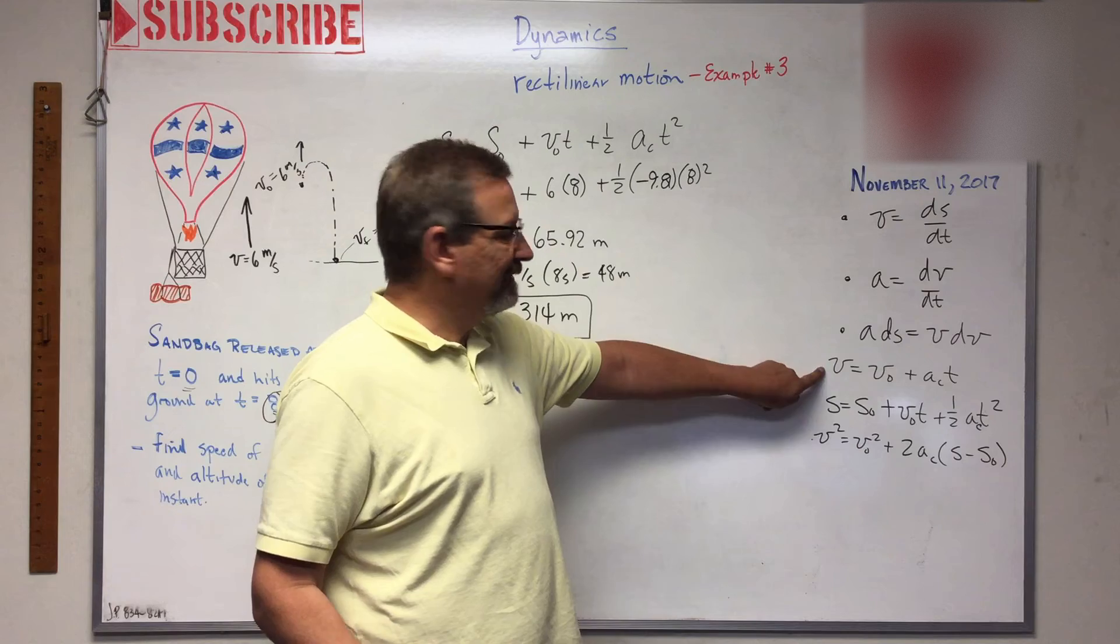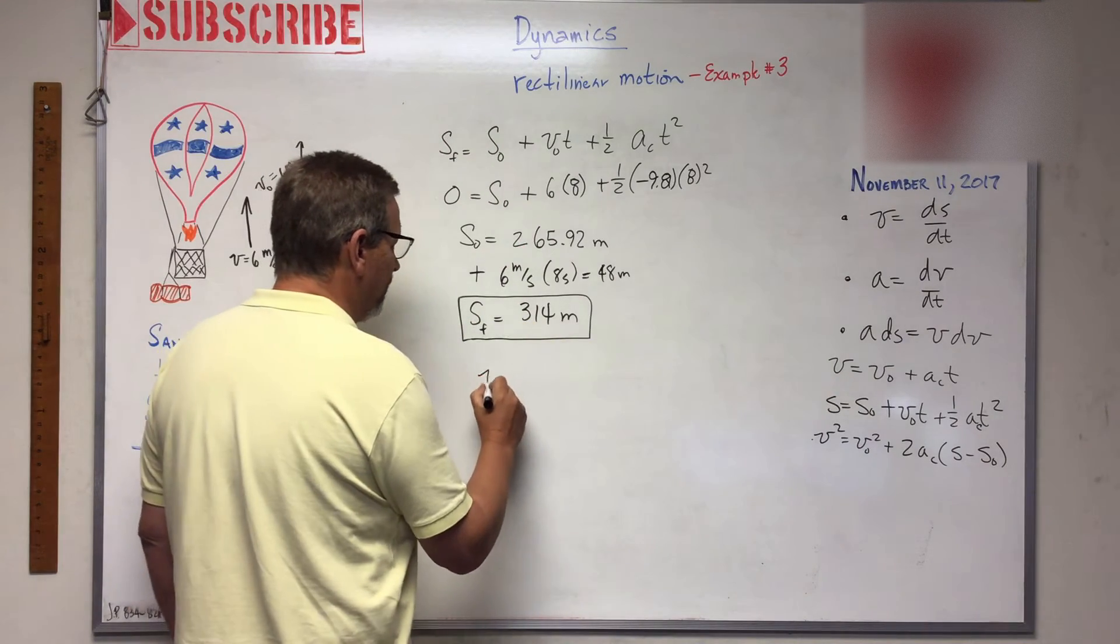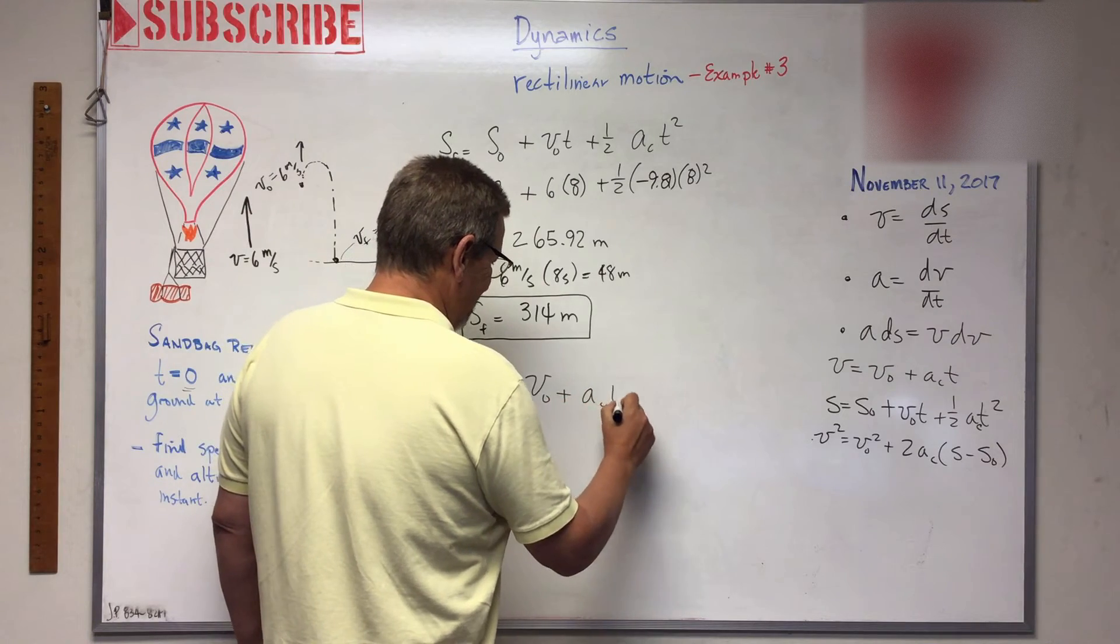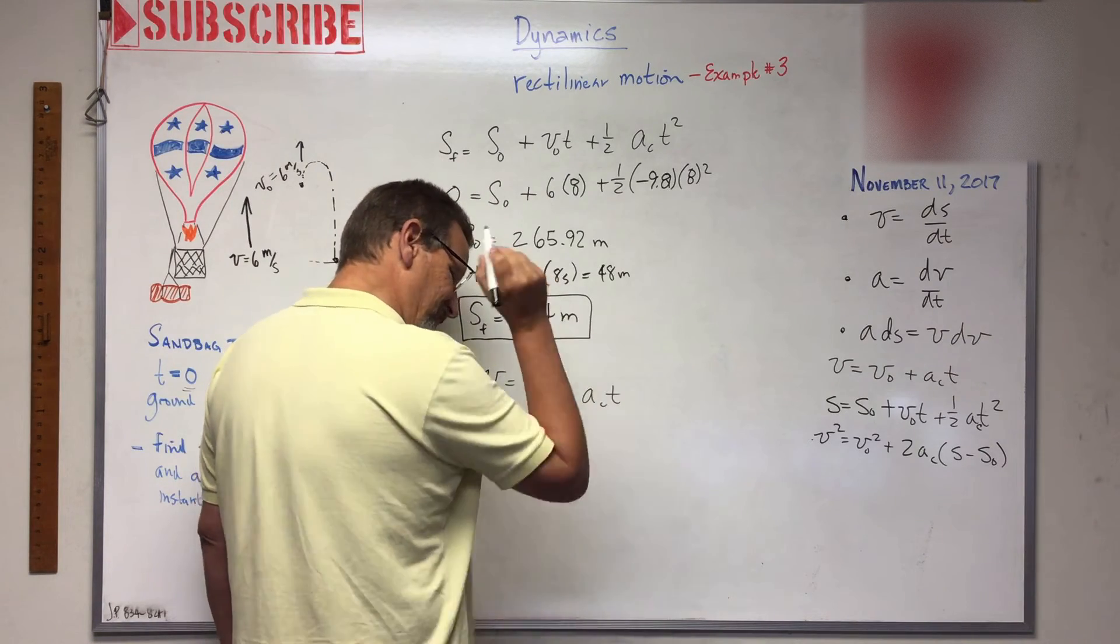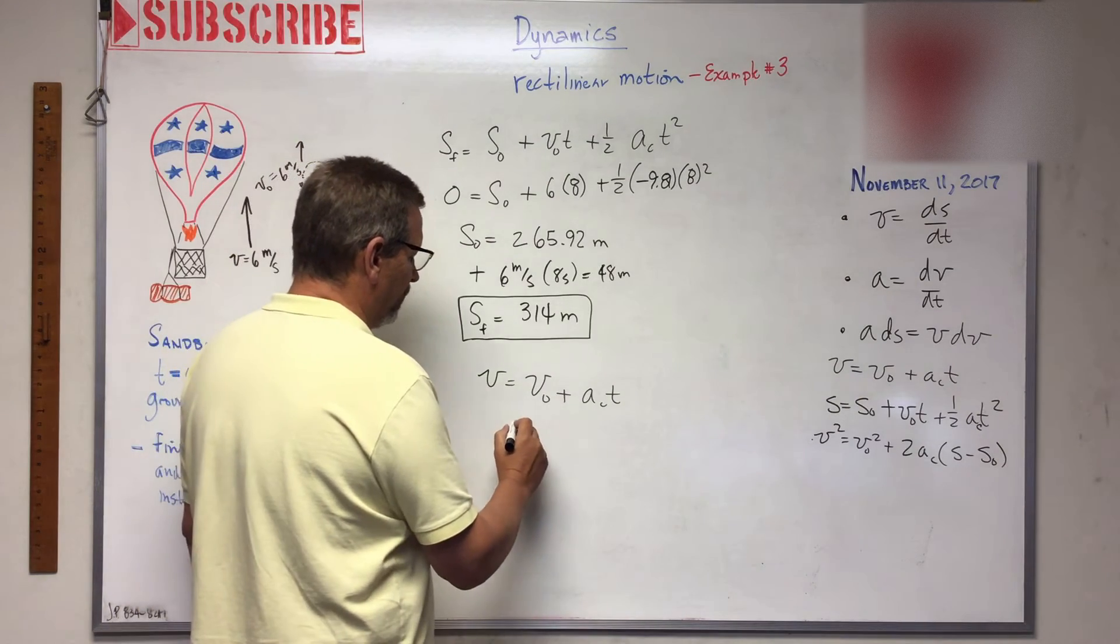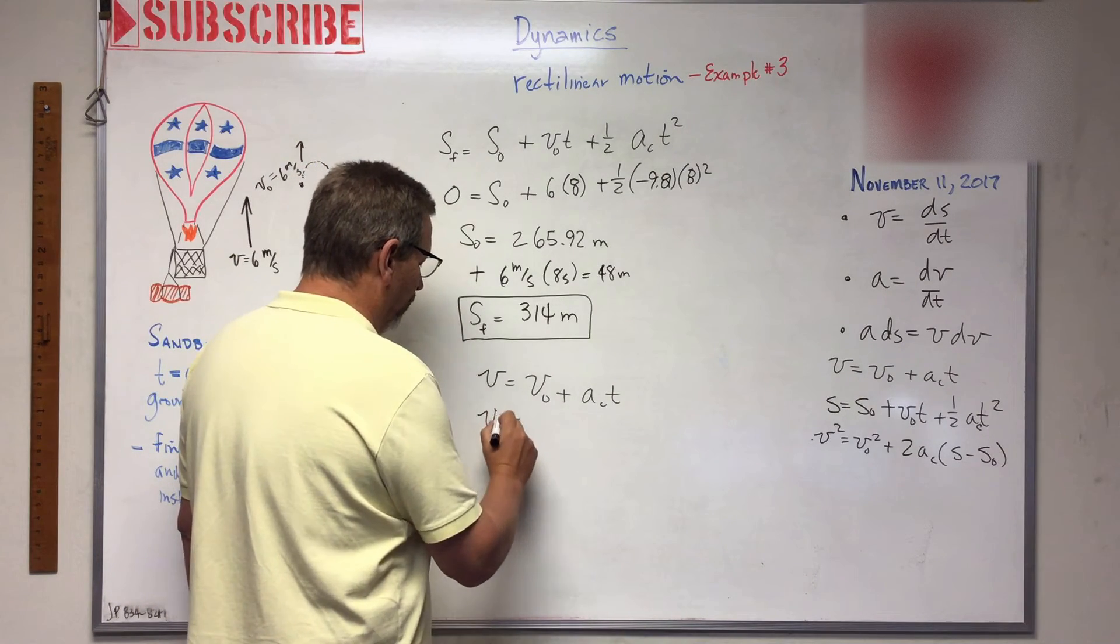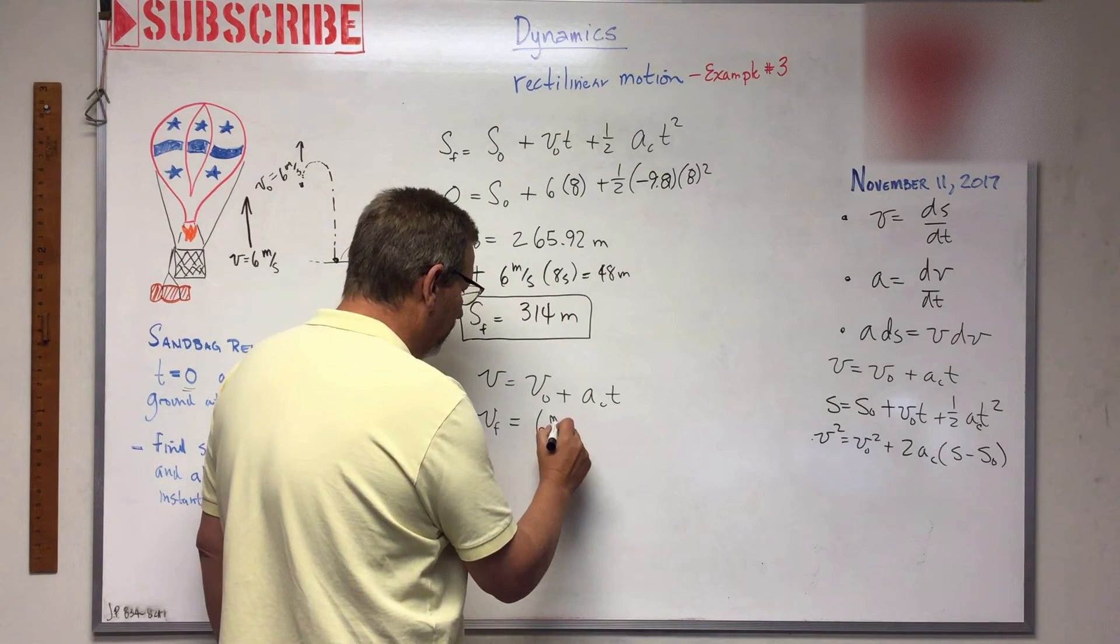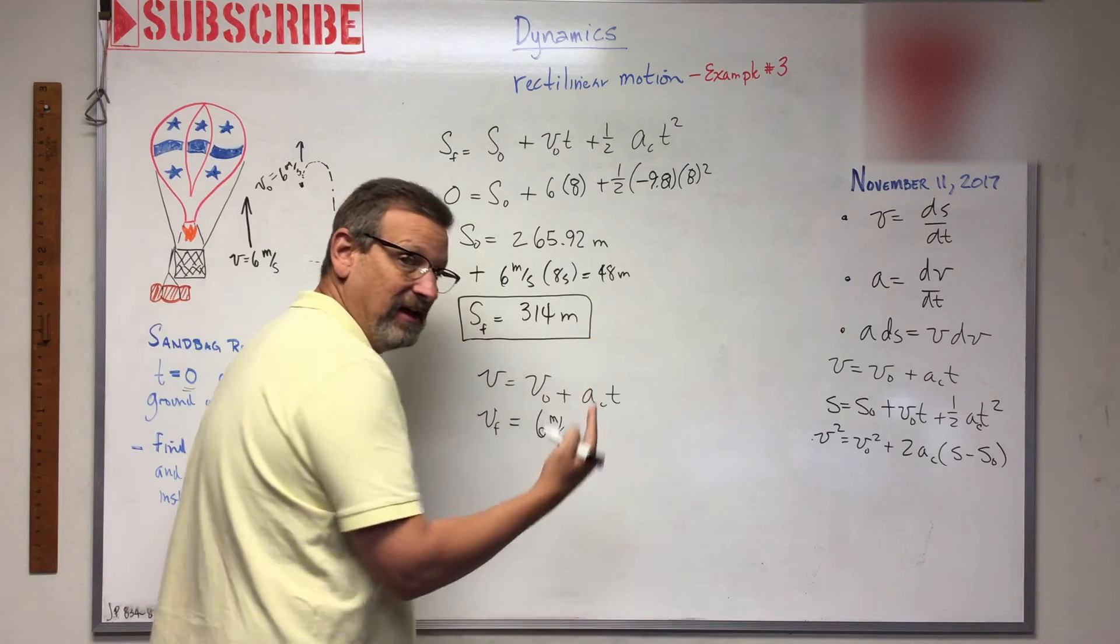v equals v_naught plus a_c t, right? And then the little a and the little c means constant acceleration. So here we go. What was the - we're looking for velocity final. What was the initial velocity? Let's call it six meters per second.